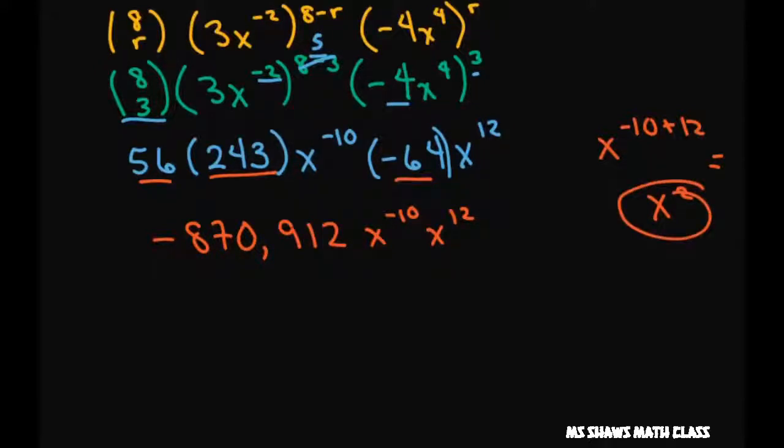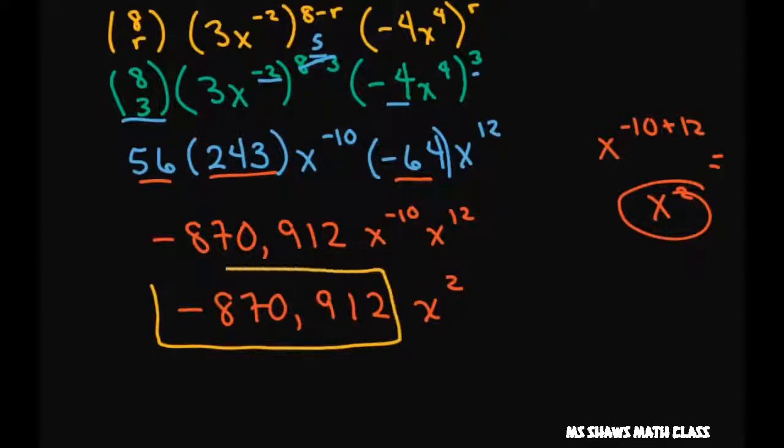So this is negative 870,912, x squared. But they only want the coefficient. So this would be your final answer.